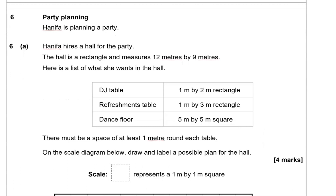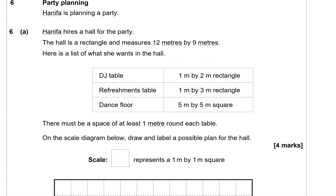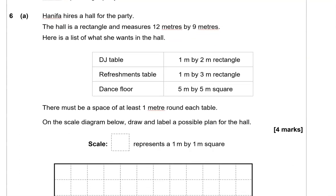Party planning. Hanifa is planning a party. Hanifa hires a hall for the party. The hall is a rectangle, and measures 12 meters by 9 meters. Here is a list of what she wants in the hall. DJ table, 1 meter by 2 meter rectangle. Refreshments table, 1 meter by 3 meters rectangle. Dance floor, 5 meters by 5 meters square. There must be a space of at least 1 meter around each table. On the scale diagram below, draw and label a possible plan for the hall. We've got a scale, which says the square represents a 1 by 1 meter square.